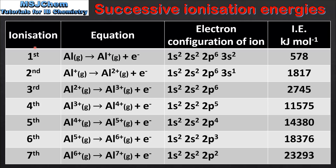In this table we have the ionization, the equation for the ionization, the electron configuration of the ion formed, and the ionization energy in kJ per mol.